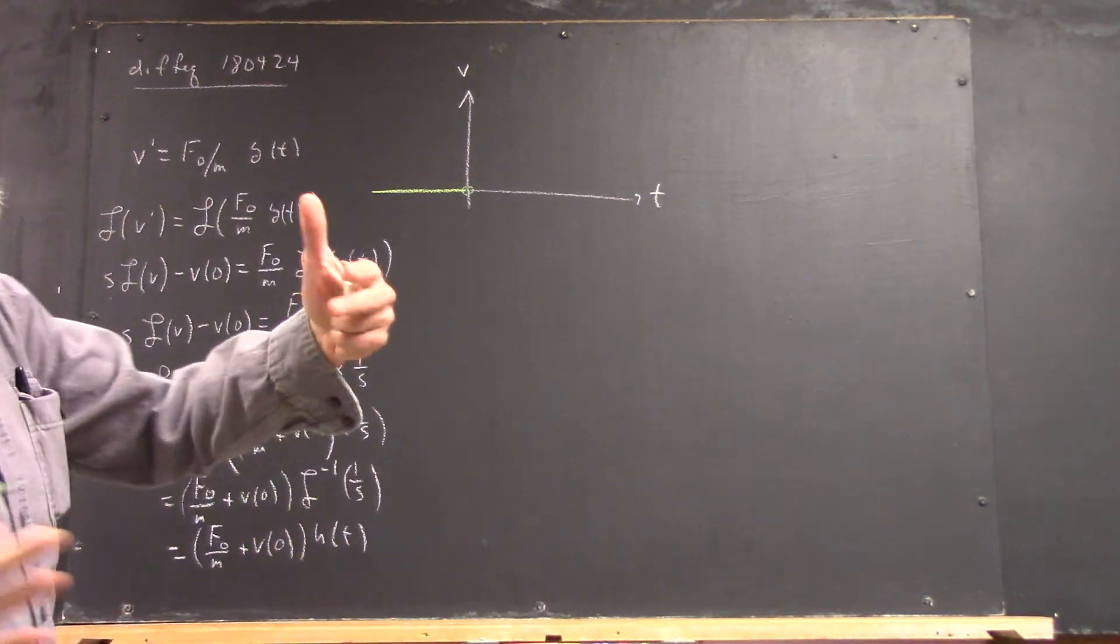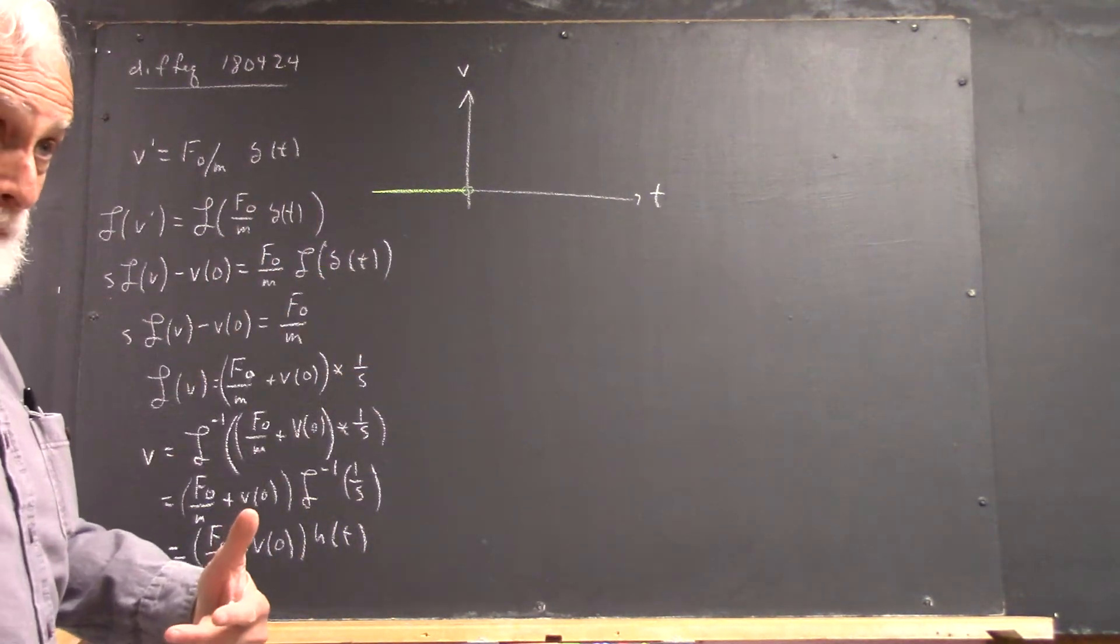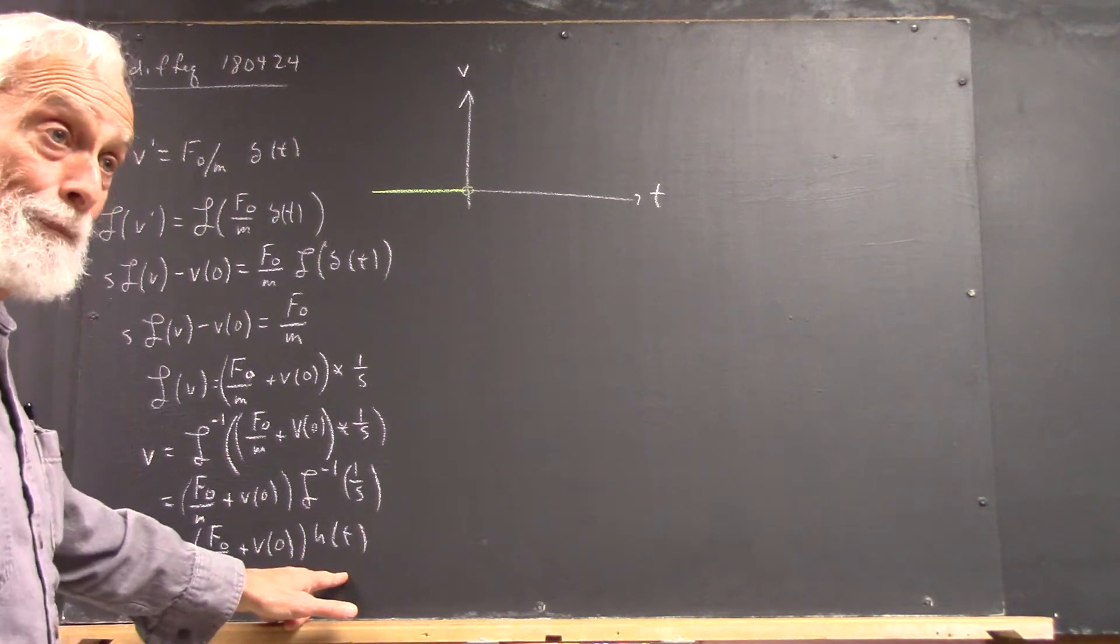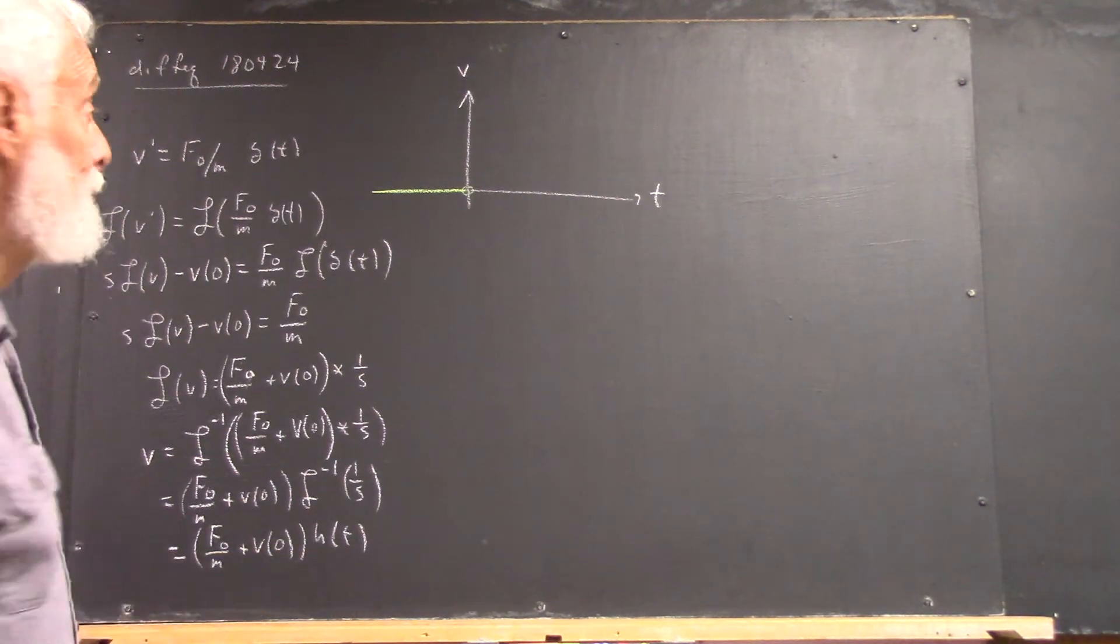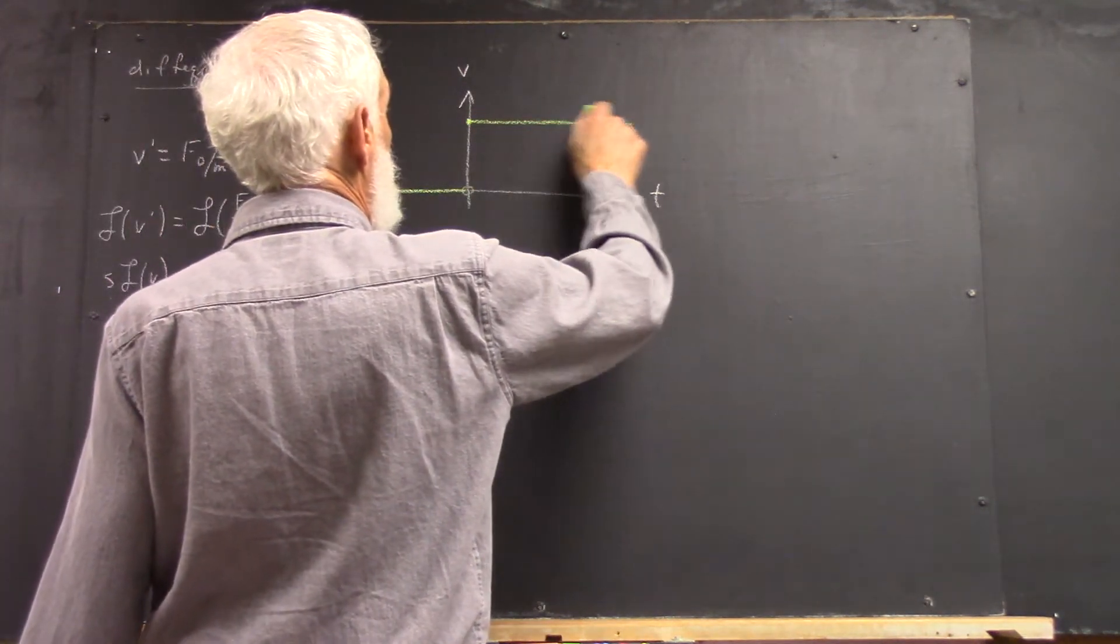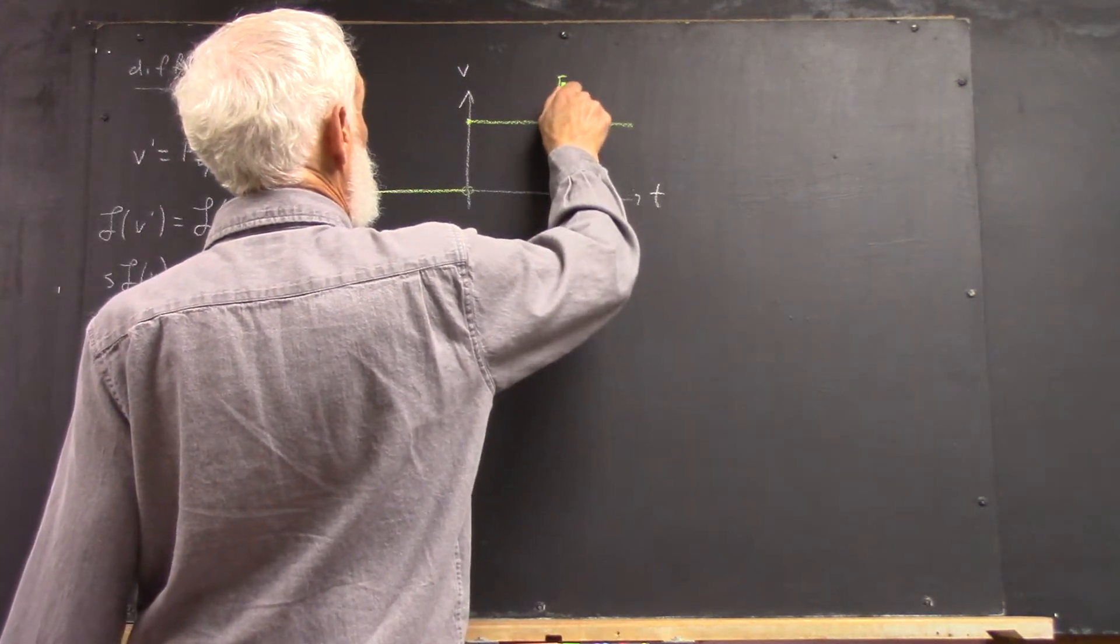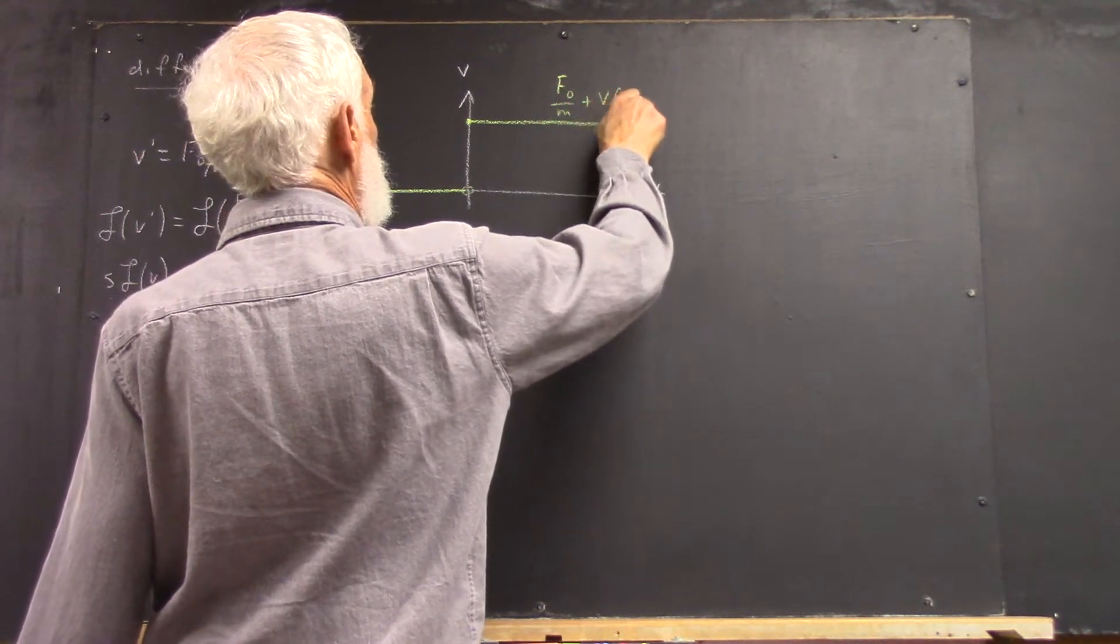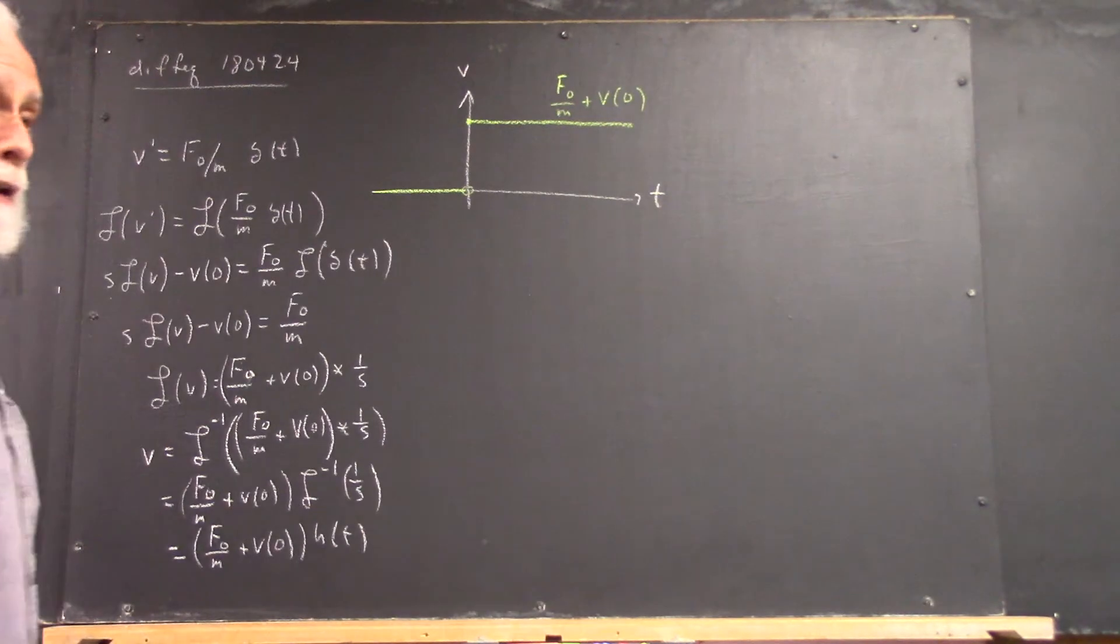Then the Heaviside function is equal to 1, so it's this multiplied by 1. Of course, this is just a constant, this is just f naught over m plus v of 0.